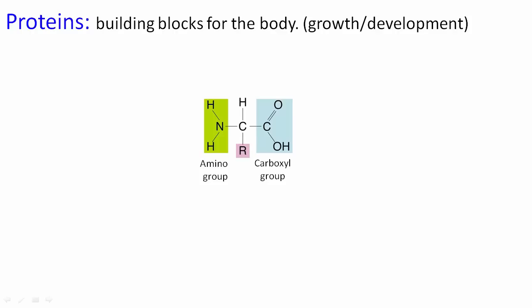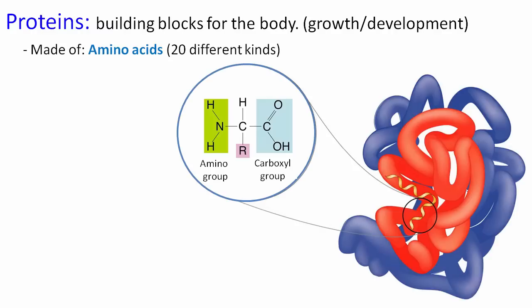The third major macromolecule used in biology is proteins. I want you to think of them as building blocks for the body—the big idea is growth and development. So what are they made out of? Their monomers are amino acids, for which there are 20 different kinds. Their structure is rather globular, meaning it doesn't have a nice structural shape—it's usually just this big blob. And of course, the amount of energy they contain is about 4 kilocalories per gram, so about the same as a carbohydrate.